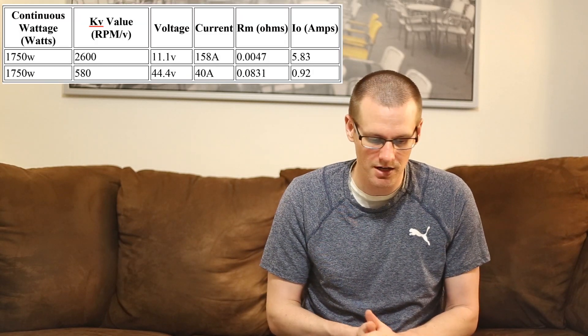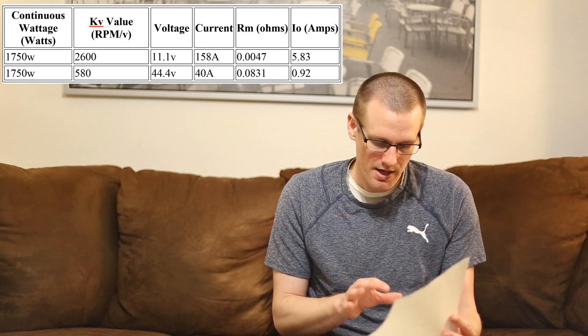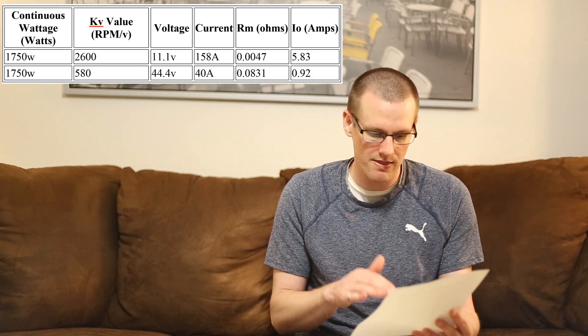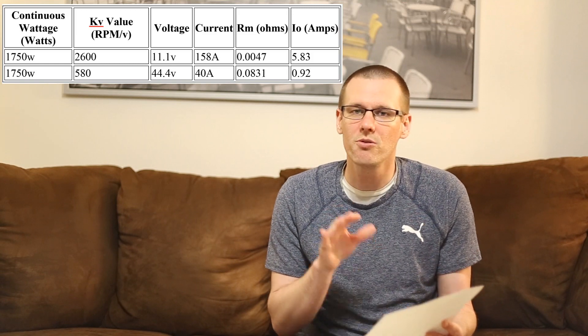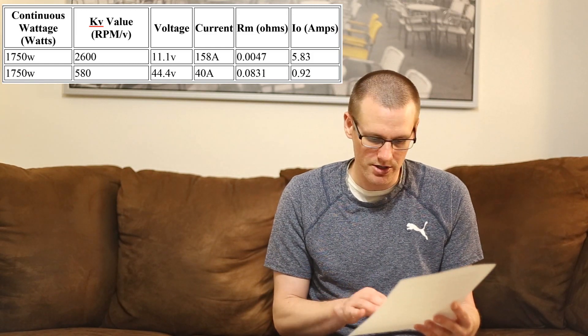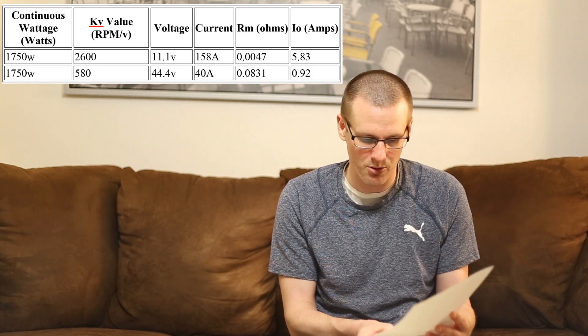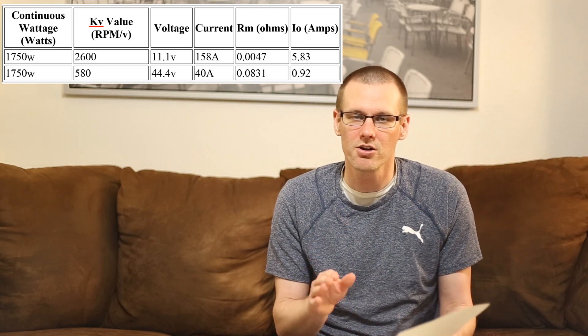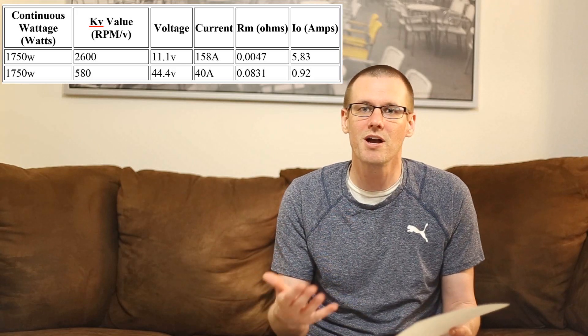Going back to our 1,750 watt motor example — one motor has a 2,600 KV and the other has a 580 KV. That's almost a difference of five. The voltage we're going to run on the 2,600 KV motor is 11.1 volts, and the voltage for the 580 KV motor operating at a much lower KV is 44.4 volts. The current of the 2,600 KV motor is going to be 150 amps and the other is going to be operating at 40 amps.